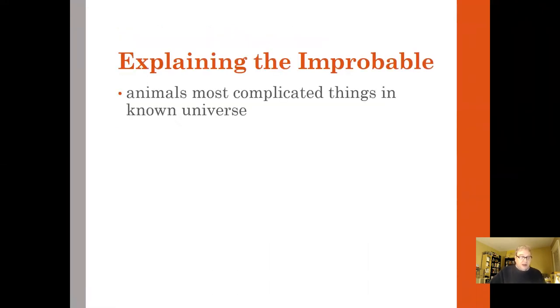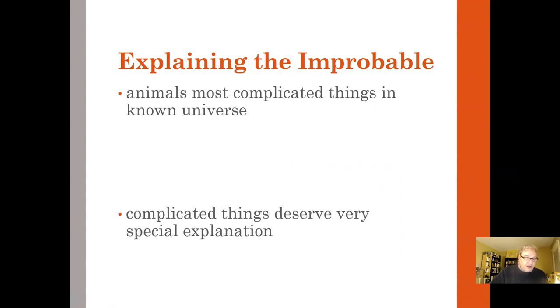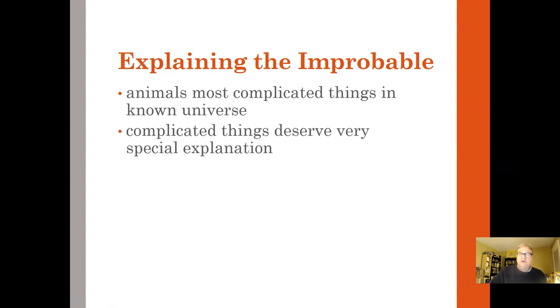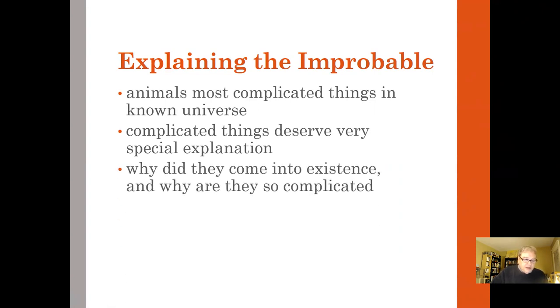Dawkins writes that animals are the most complicated things in the known universe, and complicated things deserve a very special kind of explanation. Then he asks, why did they come into existence, and why are they so complicated?